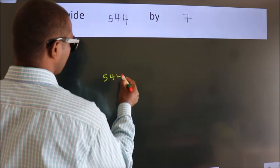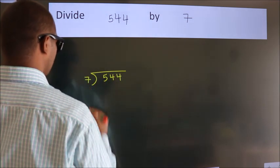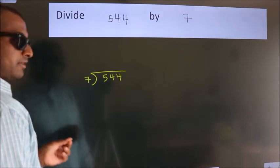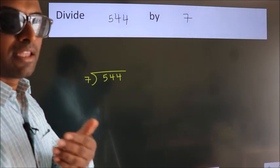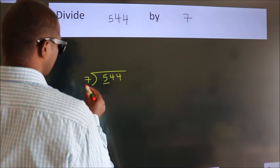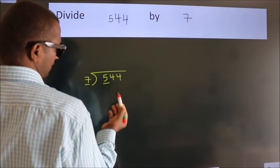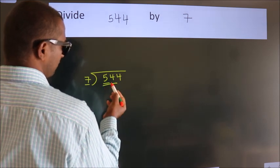544 here, 7 here. This is your step 1. Next, here we have 5, here 7. 5 is smaller than 7, so we should take two numbers: 54.